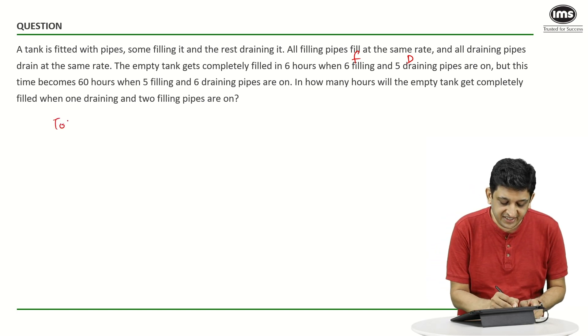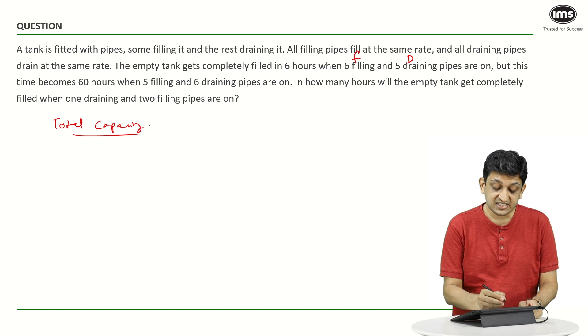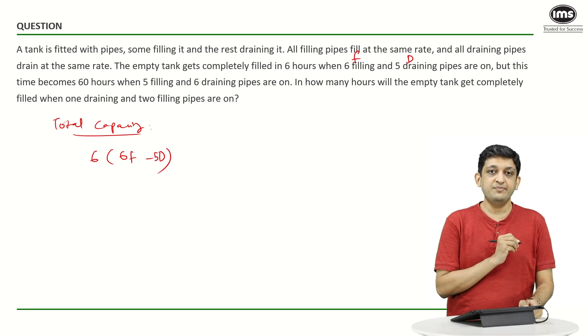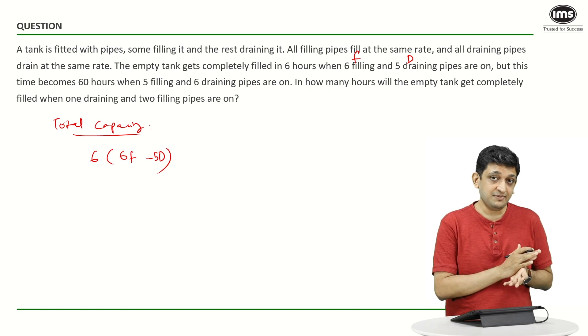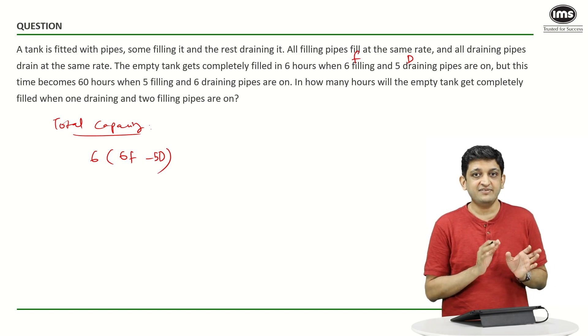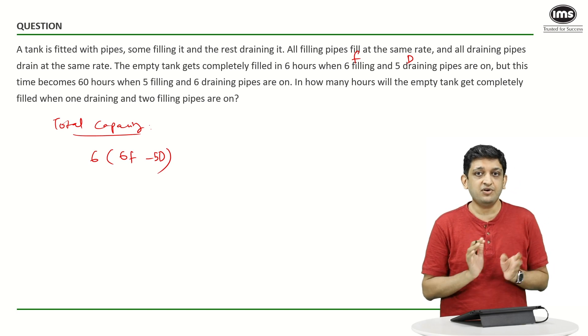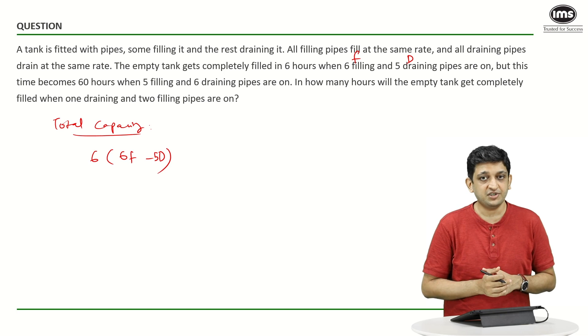So, can we say that the total capacity that we have in this case is going to be 6 into 6 filling minus 5 draining? Very important. You are filling the tank by using 6 pipes and you are draining the tank by using 5 pipes. So, 6F minus 5D is the effective amount of work that is being done per hour, multiplied by 6 will give you the capacity of the tank.